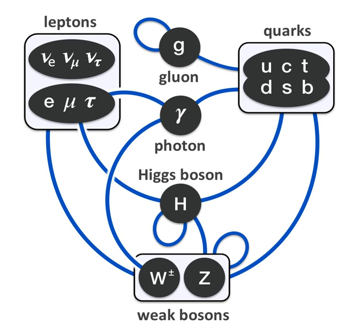The Standard Model includes 12 elementary particles of spin-½, known as fermions. According to the spin-statistics theorem, fermions respect the Pauli exclusion principle, and each fermion has a corresponding antiparticle. The fermions are classified according to how they interact. There are six quarks and six leptons: electron, electron-neutrino, muon, muon-neutrino, tau, and tau-neutrino. Pairs from each classification are grouped together to form a generation, with corresponding particles exhibiting similar physical behavior.